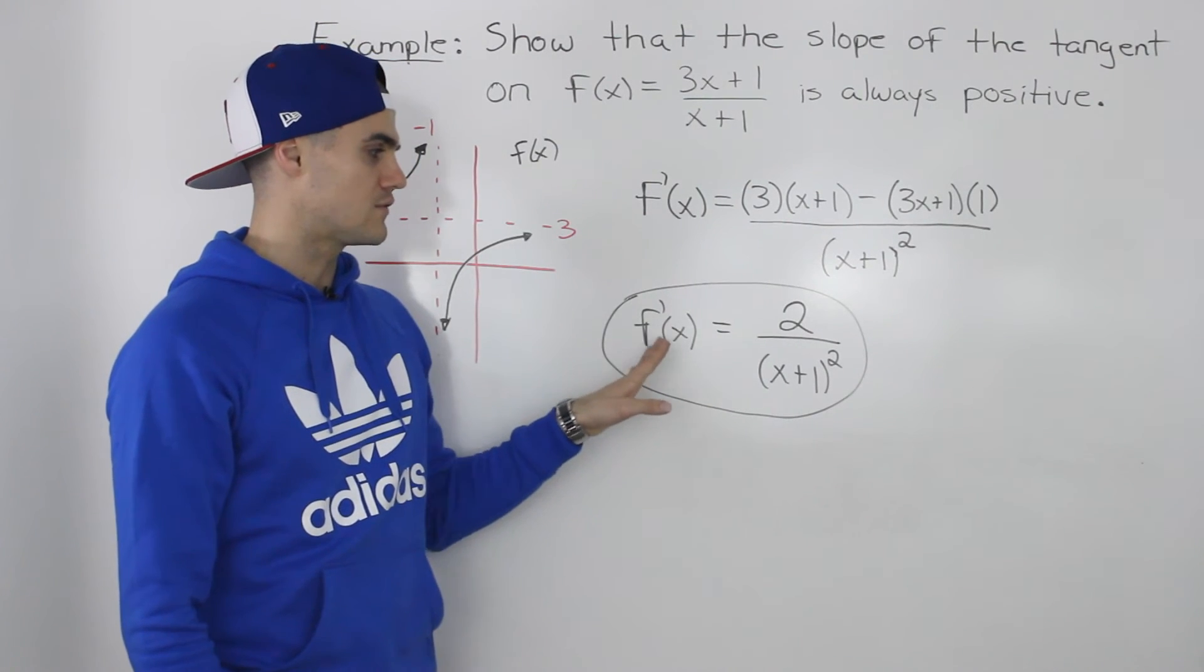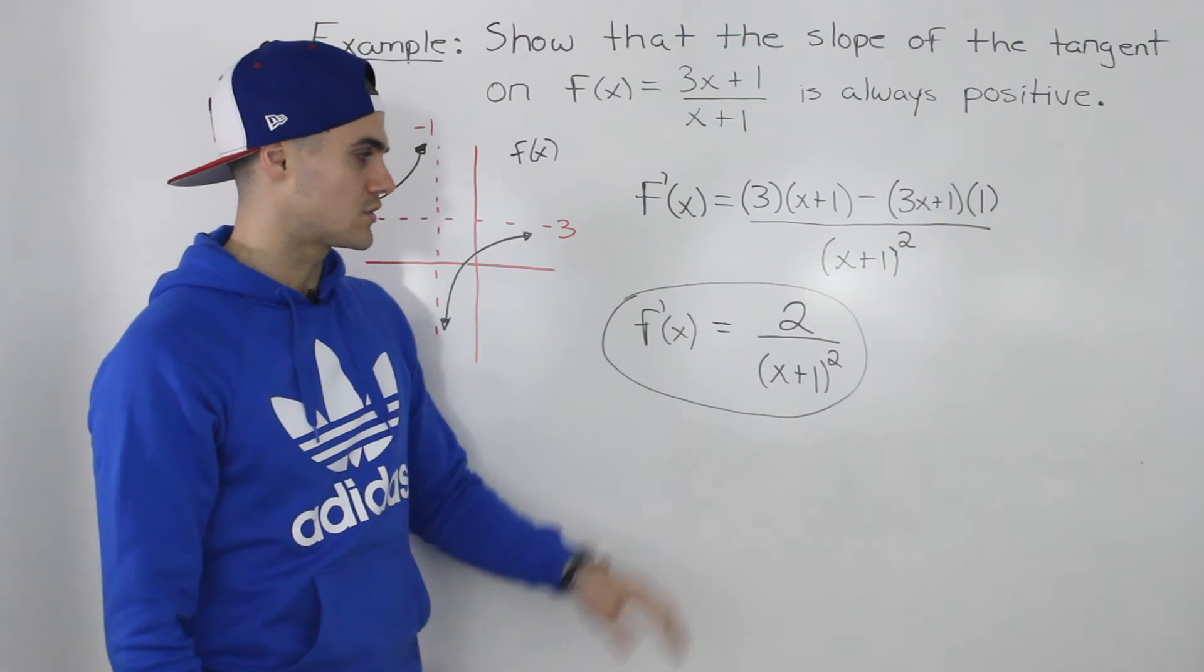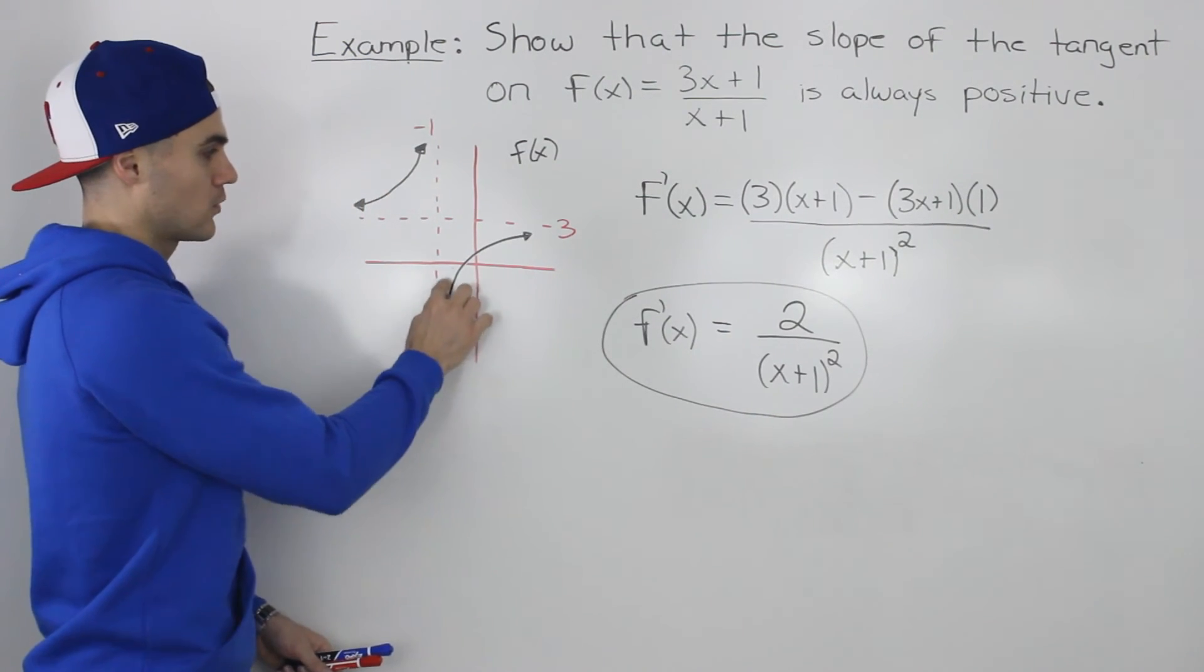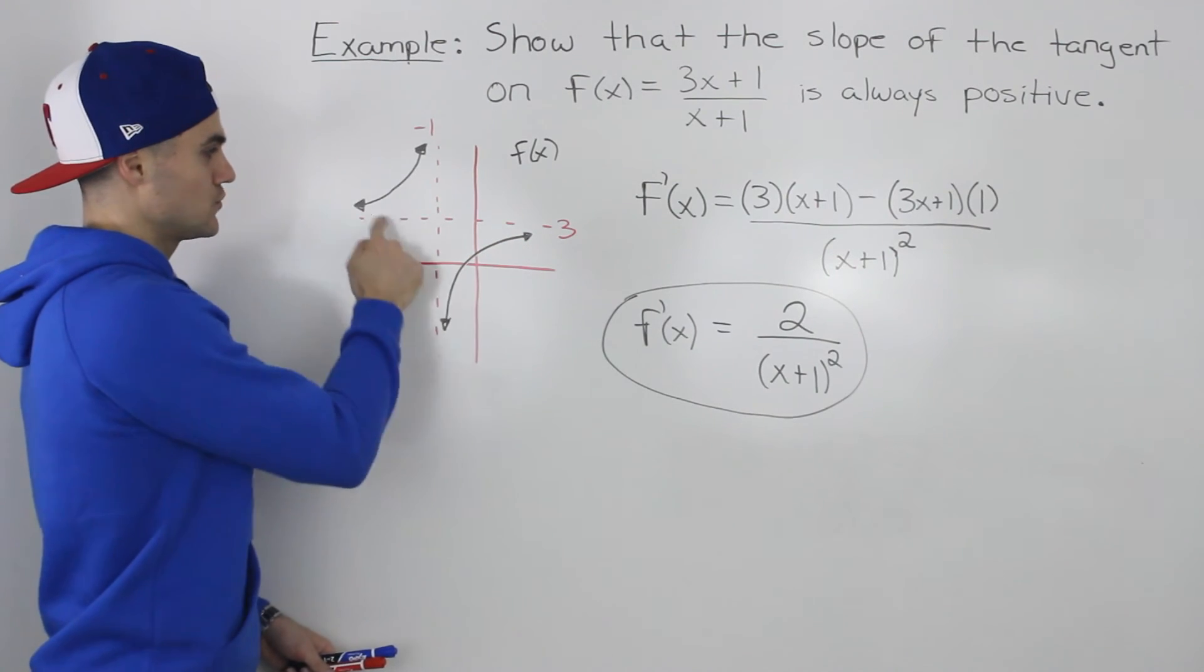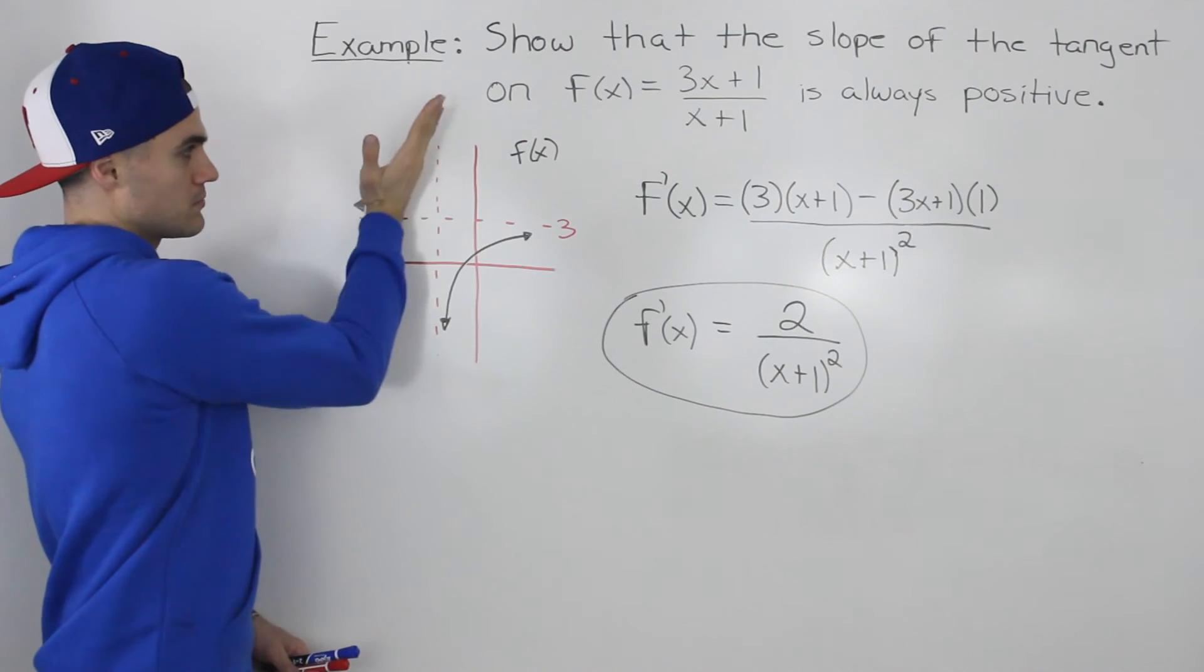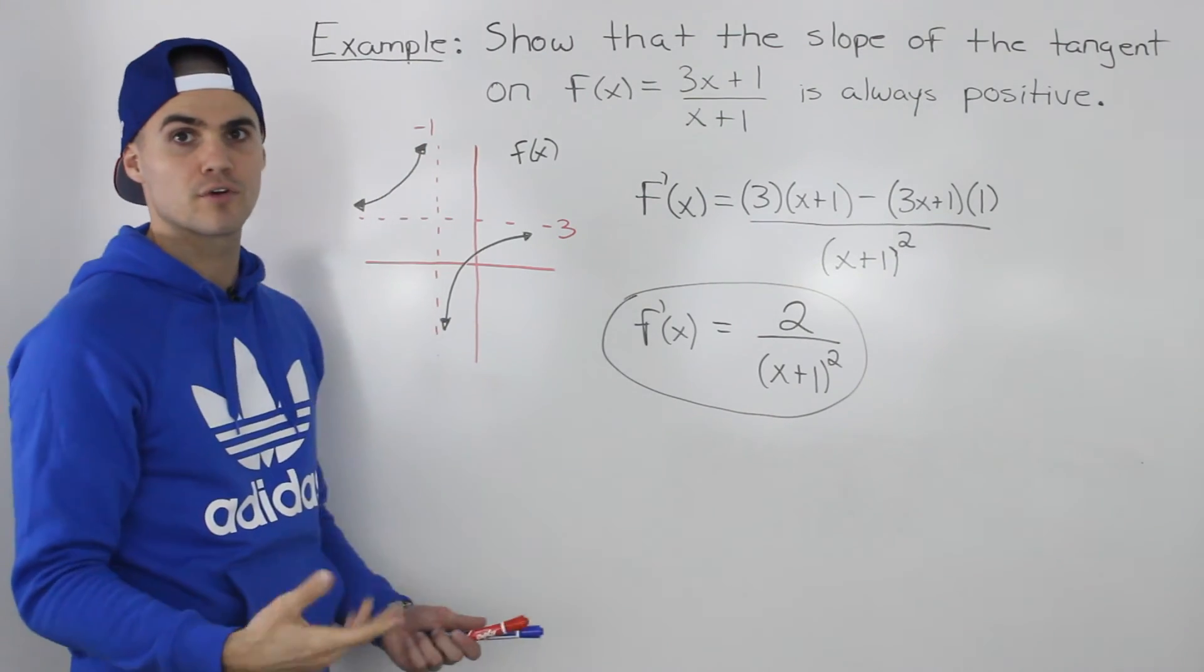So seeing the derivative in this format, you can tell no matter what x value you plug in, it's always going to be positive. And you can see it with the graph, too. No matter what x value we draw a tangent on these curves, the slope of the tangent is always going to be pointing up. It's always going to be positive. So we showed it in two different ways.